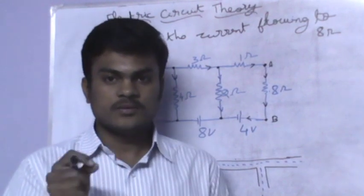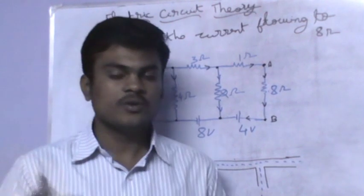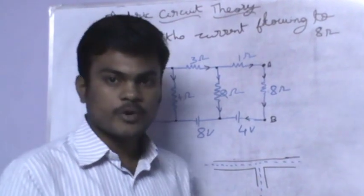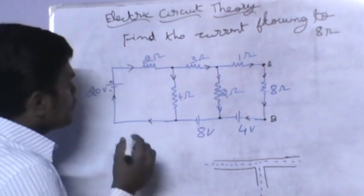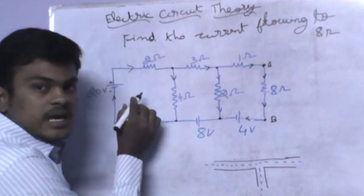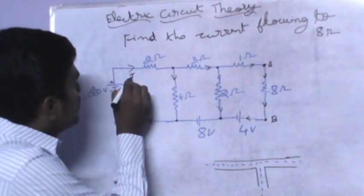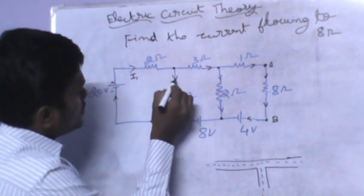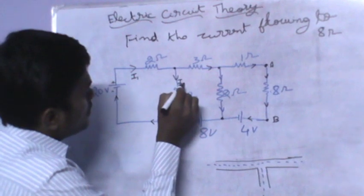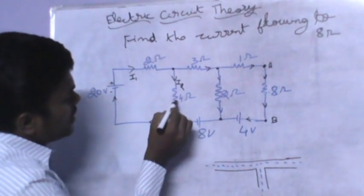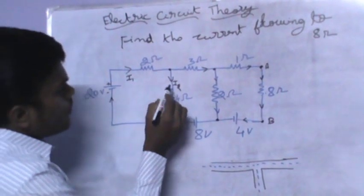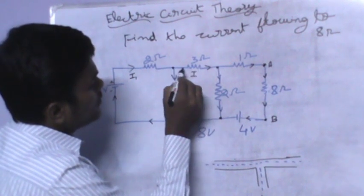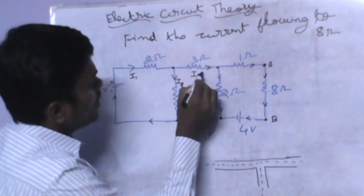Now I am going to give names to the currents — I1, I2, I3 — so that it will be easy for solving problems. The starting current is I1; it flows through the first branch. At the next branch, let me take the current as I2, and the current flowing through the 3 ohm resistor is I1 minus I2.